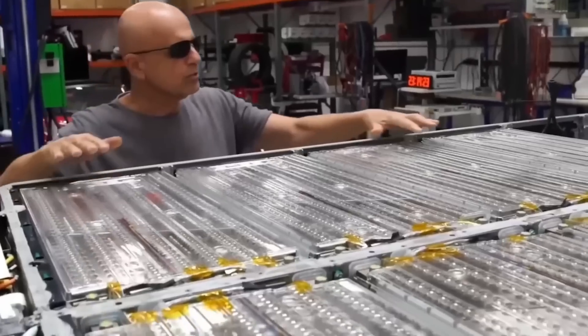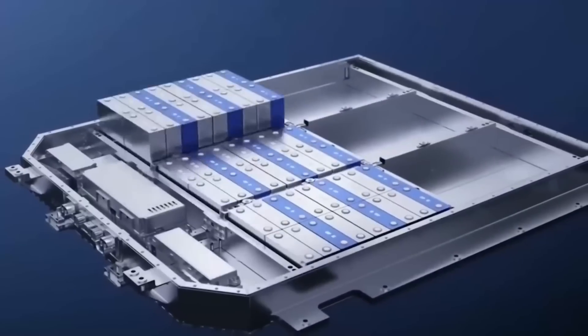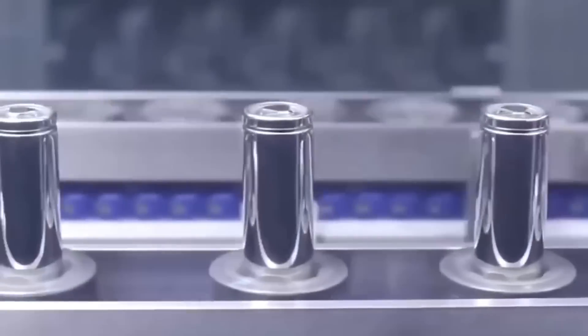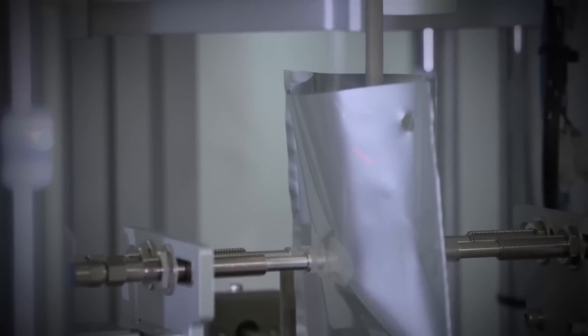Lithium sulfur batteries operate through a conversion mechanism, distinguishing them from other battery types that employ intercalation methods. When lithium reacts with elemental sulfur, polysulfides form, storing energy within the cell.